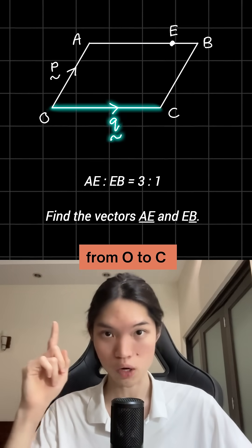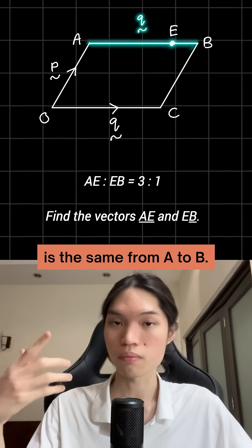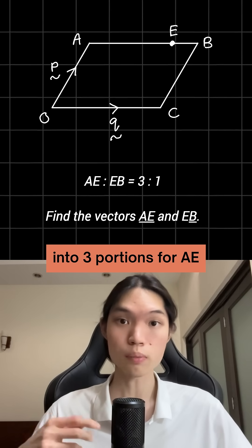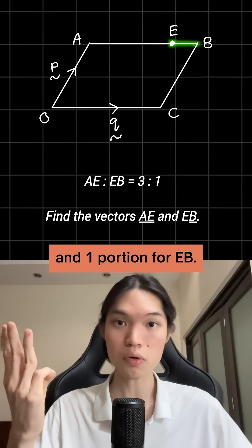So that vector Q from O to C is the same from A to B. The ratio divides the line AB into 3 portions for AE and 1 portion for EB.